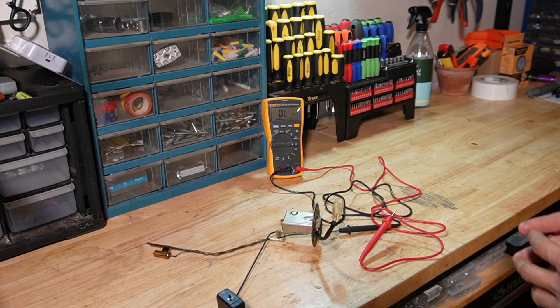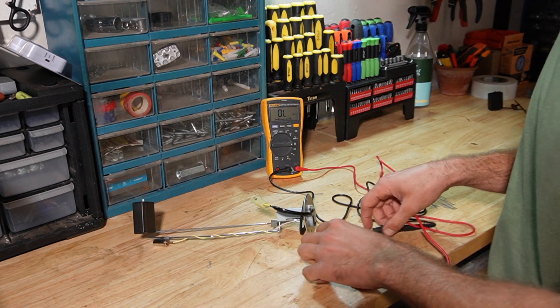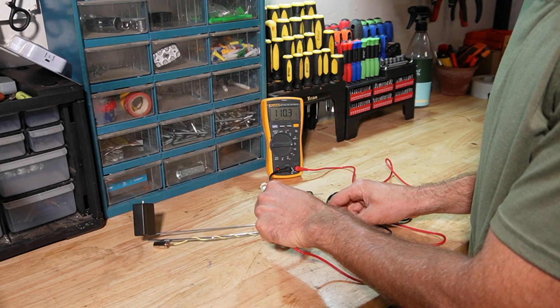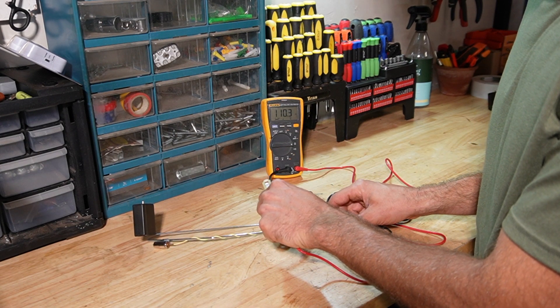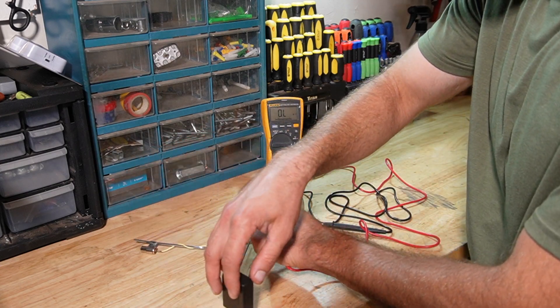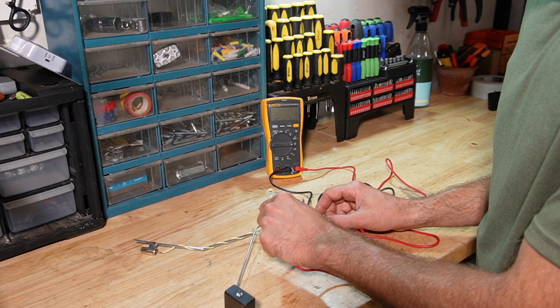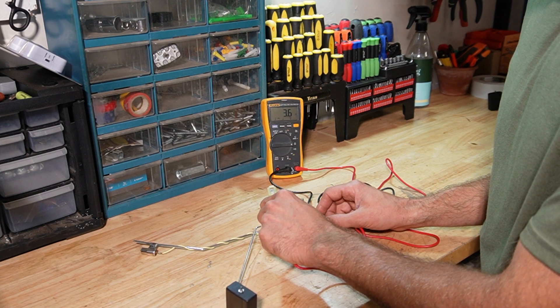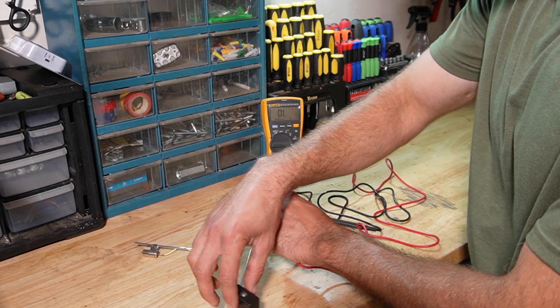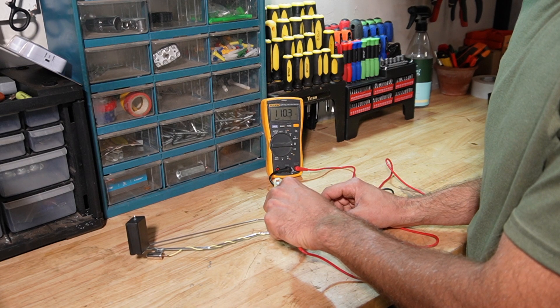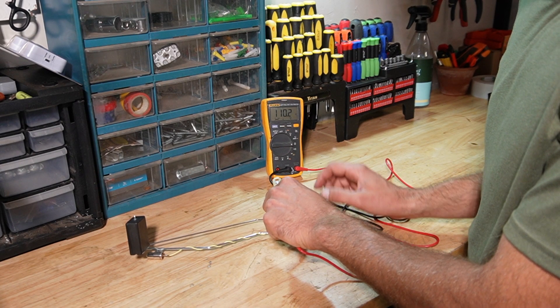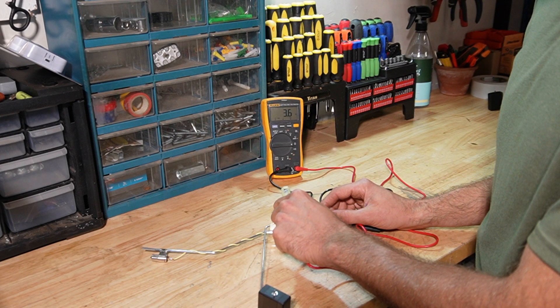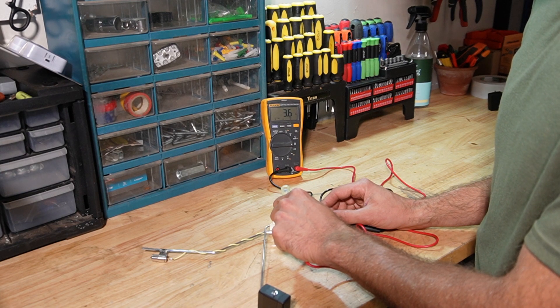I figured this might be the problem, so I've already bought a new one. Let's see what the new one reads. With the float in the empty position, it's reading right about 110 ohms. That's perfect. In the full position, it's reading right between 3 and 4 ohms, which is perfect. Notice that it's stable, unlike the old one. Back to empty. 110. Back to full. 3.6. That's perfect. So this sensor is good. Let's get it on the tractor.